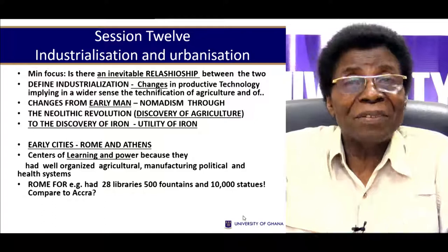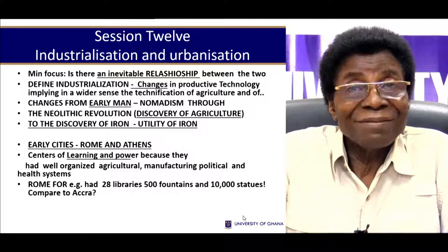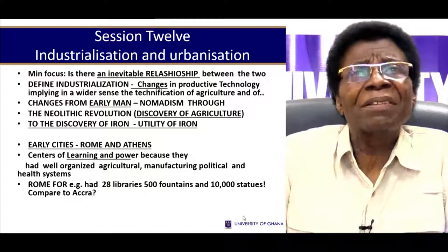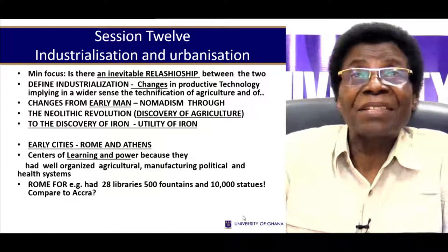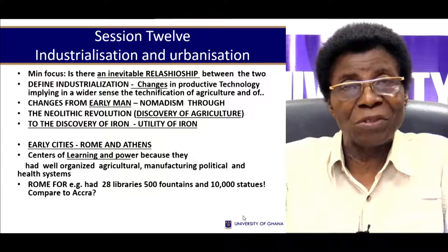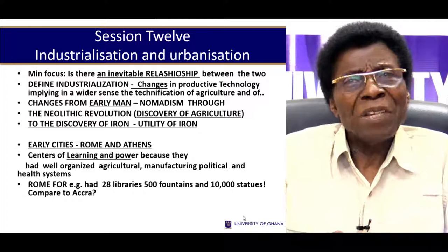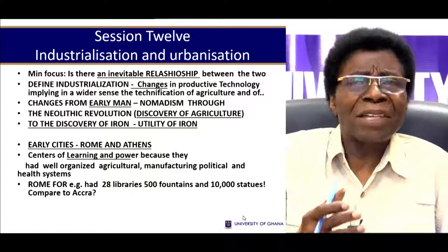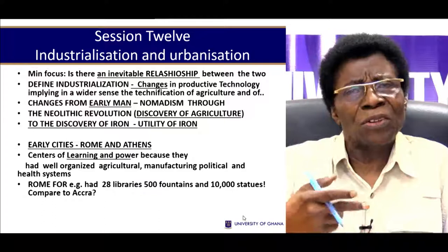We have to begin from the very beginning by defining the key concepts. The key concept here is industrialization. The definition varies from writer to writer, but what we have selected here is that it refers to changes in productive technology — implying, in a wider sense, the technification of agriculture and of services. It means ultimately the application of inanimate sources of power to the production of goods and services. Inanimate sources of power refer to machines — the use of machines in the production process.